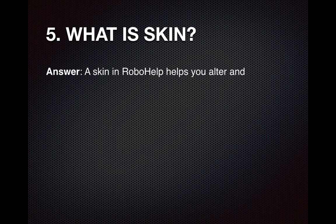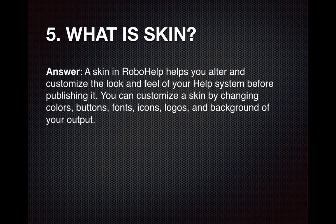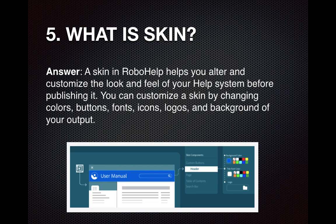Question number five: What is a skin? A skin in RoboHelp helps you alter and customize the look and feel of the help system before publishing it. It is a very important feature of RoboHelp. You can customize a skin by changing colors, buttons, fonts, icons, logos, and backgrounds of your output.